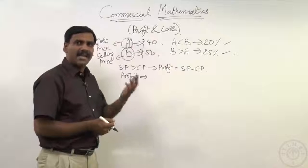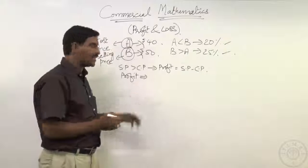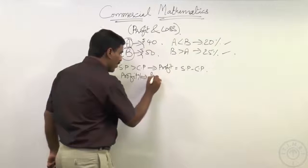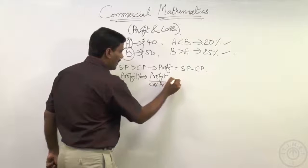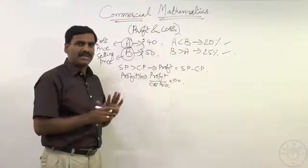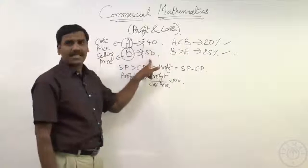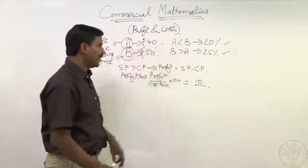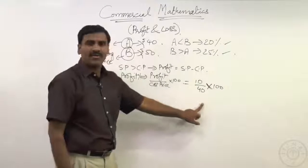Why is profit percentage calculated only on cost price? Because it is the investment that we are making — return is calculated on investment. So profit percentage is always calculated on cost price. Profit percentage is given by profit divided by cost price into 100. Here the profit is 10 rupees on a cost price of 40 rupees, so 10 on 40 is 1 by 4, which is 25 percentage.